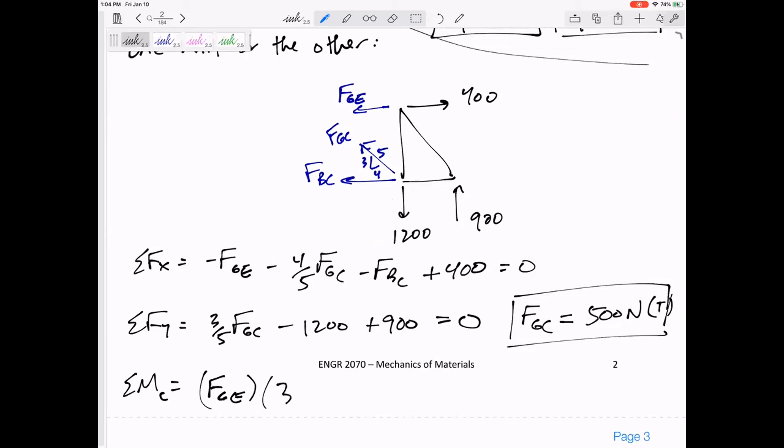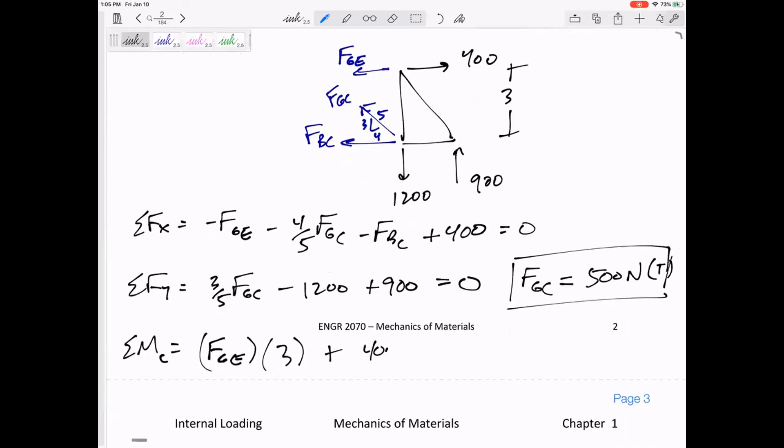FGE is acting—its moment arm is three. I should kind of draw dimensions—that's three tall, it's four wide. That would be a positive moment because it would cause counterclockwise rotation. Counterclockwise is positive in this class. And then 400 is three, but that would be negative because that would cause clockwise rotation. And 900 is four away—that would be positive equals zero. FGE comes out to be negative 800 newtons. What does that negative mean? That negative means I drew it the wrong direction to begin with.